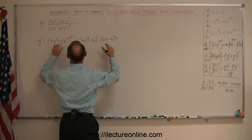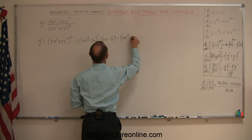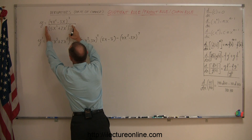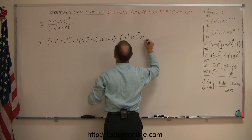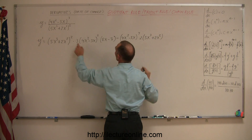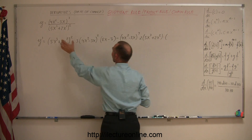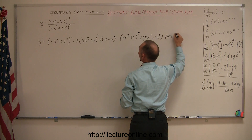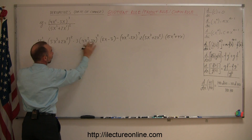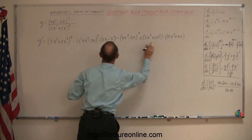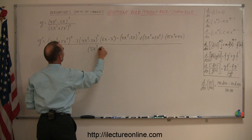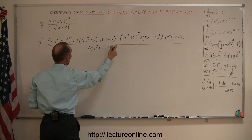Now we go minus the numerator, which is 4x squared minus 3x raised to the third power, times the derivative of the denominator. To take the derivative of that we have to use the chain rule, so it's times 2, times 5x cubed plus 2x squared to the first power, times the derivative of what's inside, which is 15x squared plus 4x. The whole thing is divided by the denominator squared — that's 5x cubed plus 2x squared to the second power squared, which means to the fourth power.